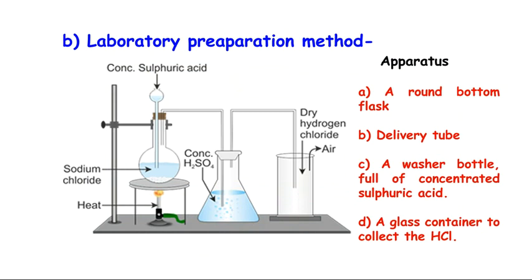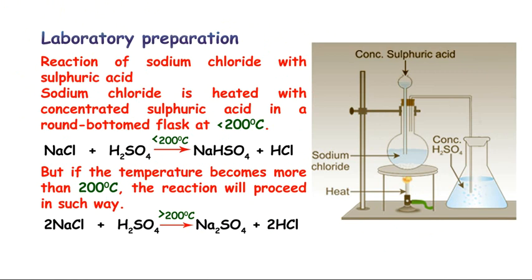The reagents used in the laboratory preparation of HCl are NaCl and concentrated H2SO4. Initially, the round bottom flask is charged with some amount of NaCl, and through a tube, concentrated H2SO4 is added when the system temperature is less than 200 degrees Celsius.